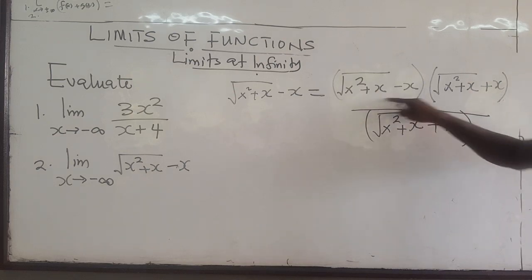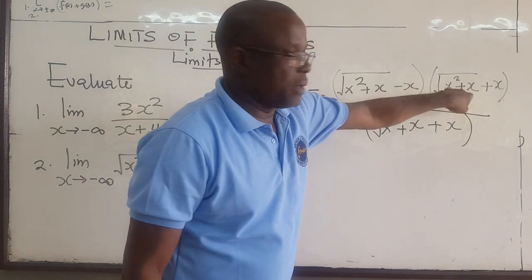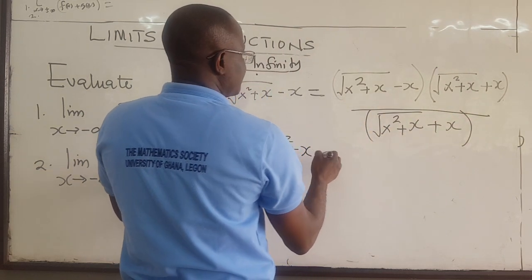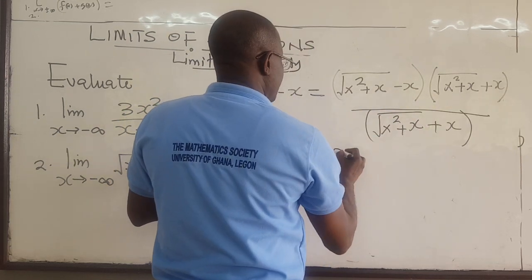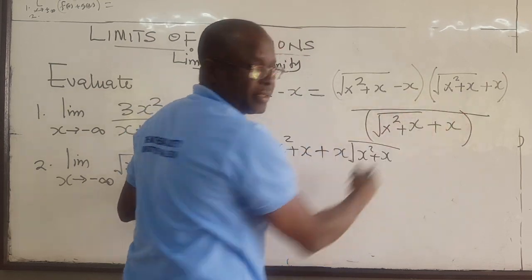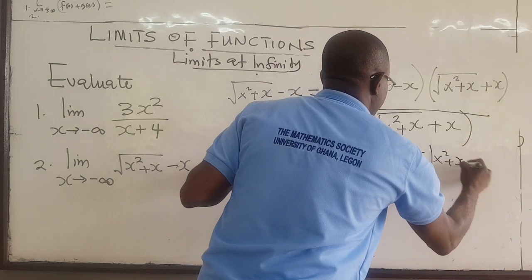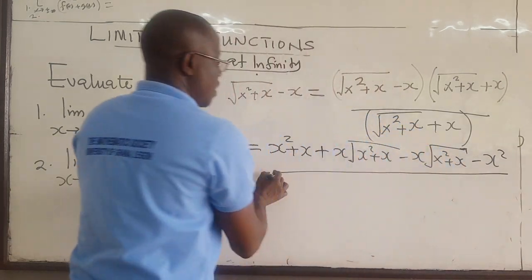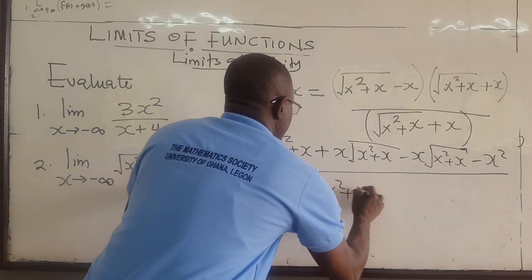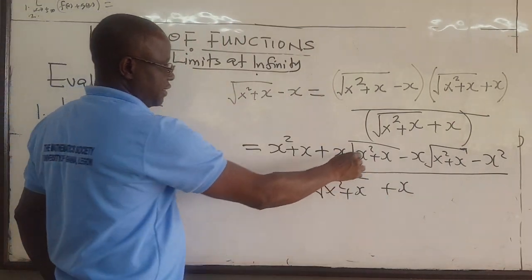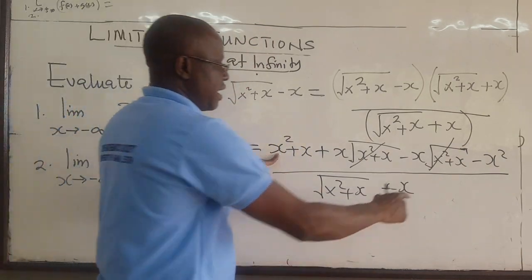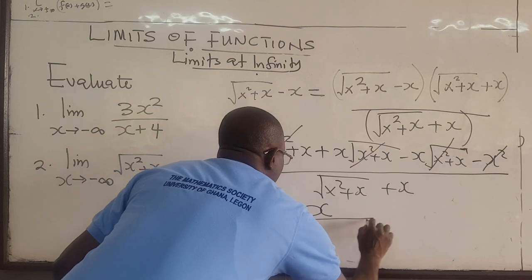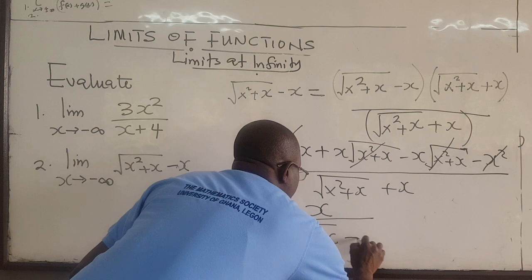When you multiply this out, square root times square root removes the radical, giving x squared plus x. The cross terms — x times the square root and negative x times the square root — cancel each other out. Negative x times x gives negative x squared, which cancels with x squared. In the end, you have x at the top, all over square root of x squared plus x, plus x.